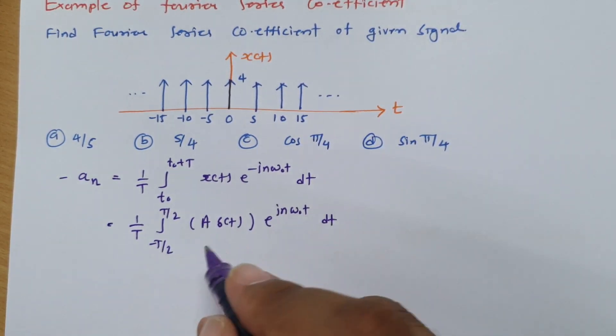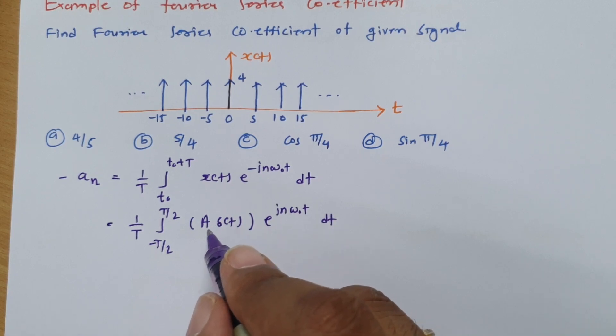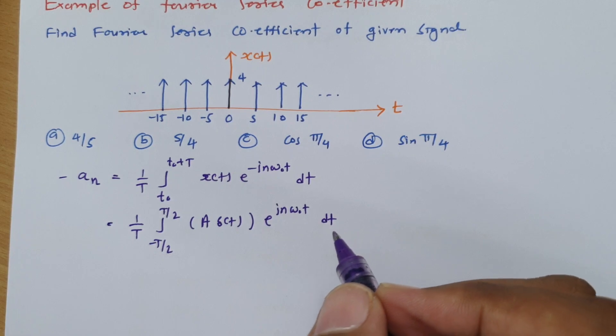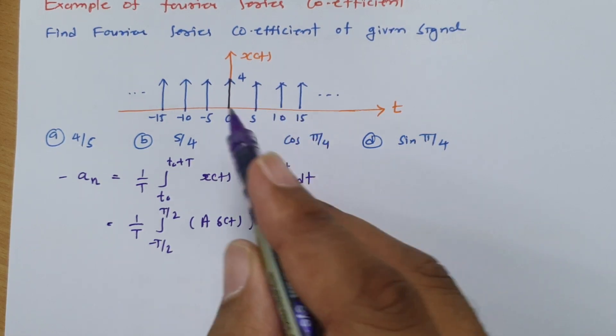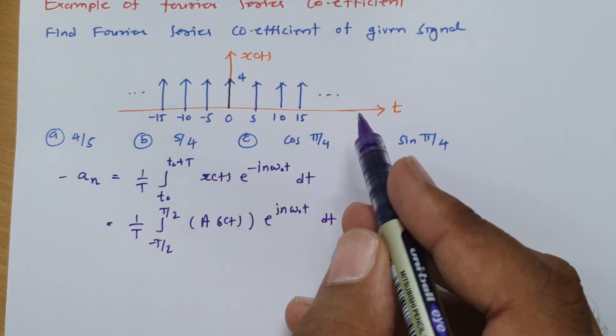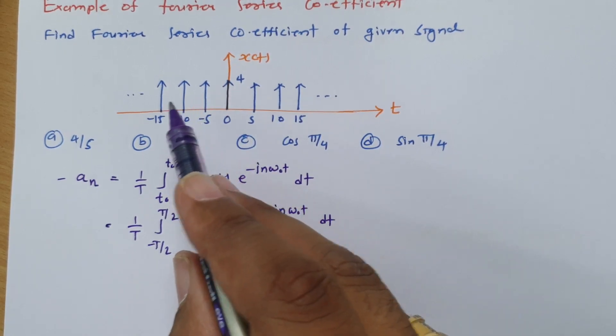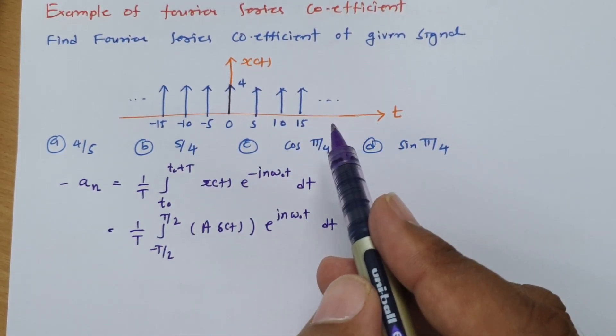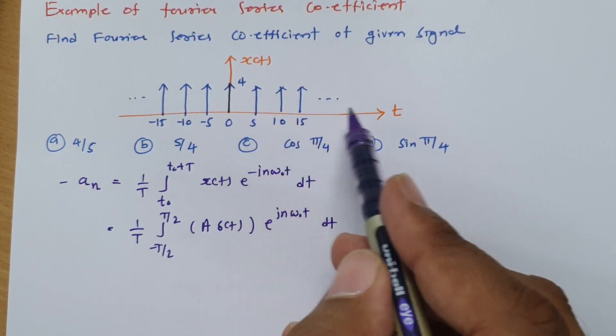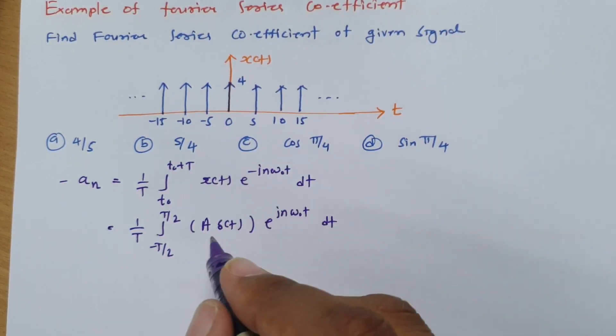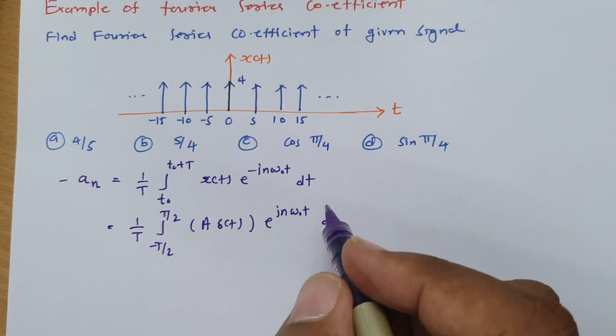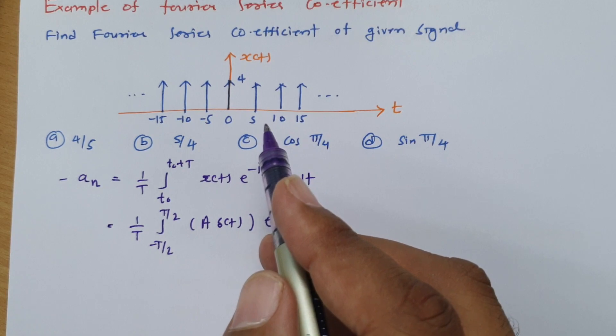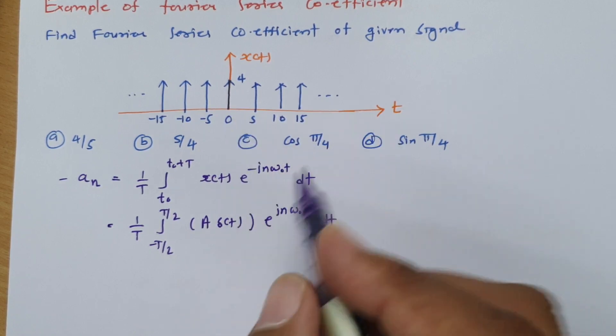When you have integration of any function, this is not a continuous function. This is an impulse function. Integration of impulse function will be unity only. Whatever term you have, if you integrate it with impulse function, it will be unity as the area of impulse function is unity.